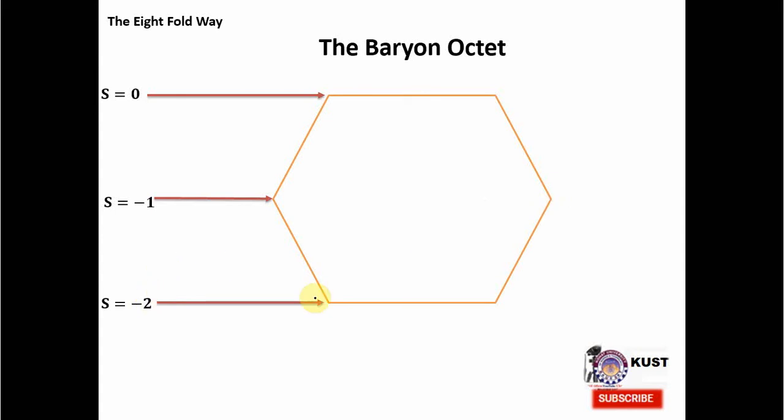The second property we will assign to every place and corner of this hexagon is charge, and that will be done by using the slanted lines. For example, the first slanted line will give Q = +1, and in the direction of this line, every place and corner will get the charge equal to +1. The next line is here in the middle and it is Q = 0. And the third and last line is Q = -1, which will give the value of Q = -1 to every place and corner on this line.